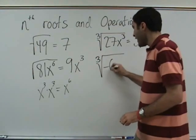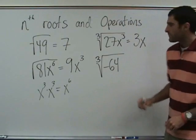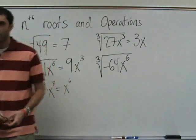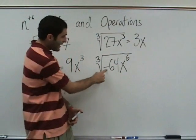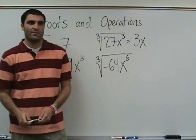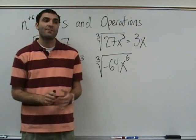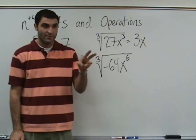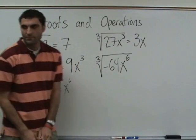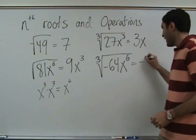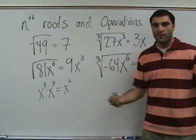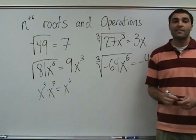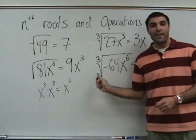Cube root of negative 64 x to the 6. What do you think? Negative 4 times negative 4 times negative 4 is negative 64. Negative 4. Since it's cubed you can use negative. So you don't have to take the i out? No. i is not even relevant here. You can have cube roots of negative numbers.